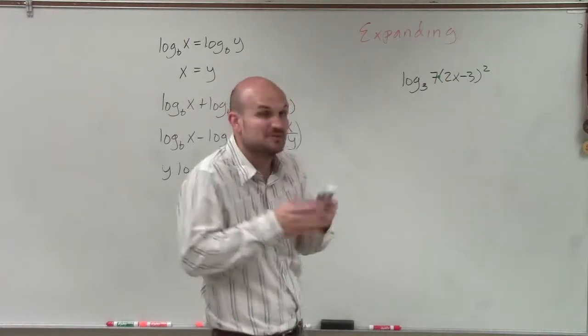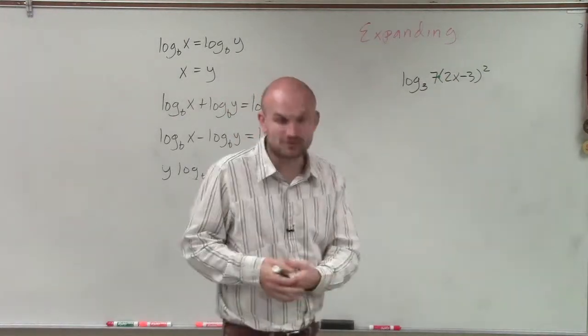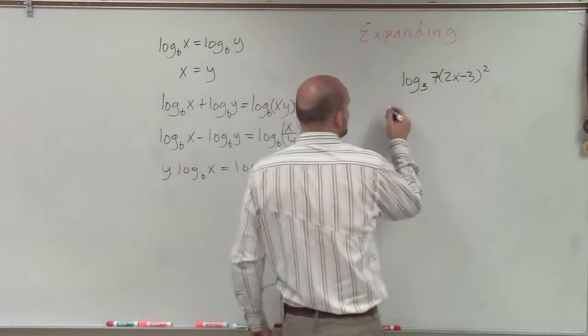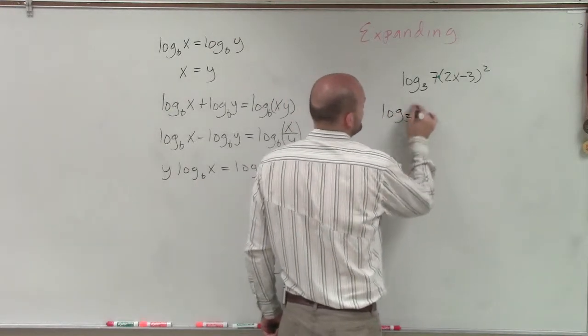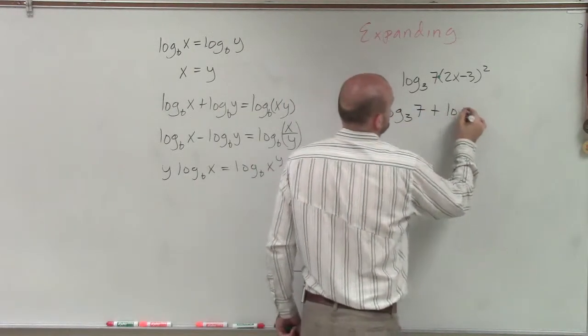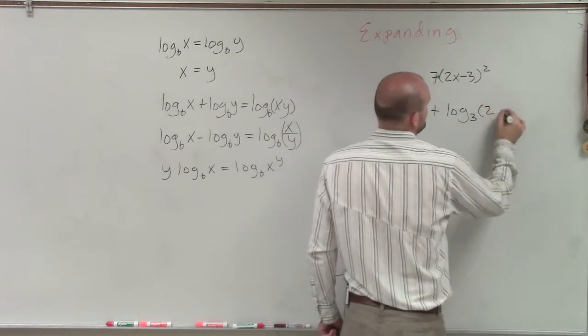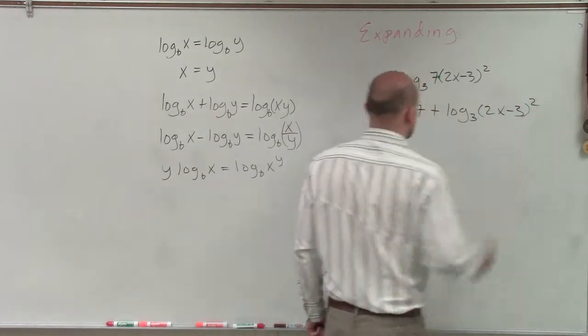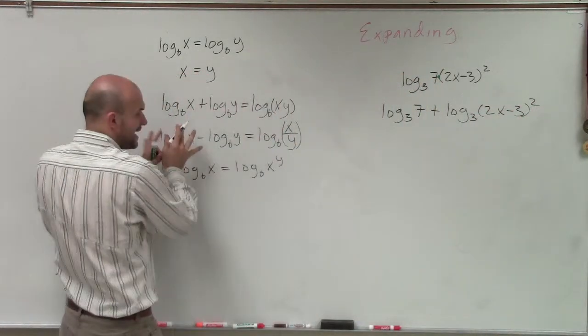But I do see a product between 7 and 2x minus 3 squared. So therefore, I can rewrite that as log base 3 of 7 plus log base 3 of 2x minus 3 squared. By applying this rule, I can now do that.